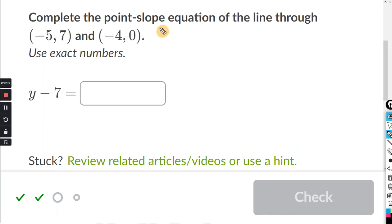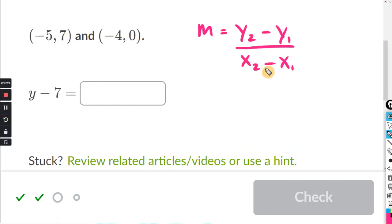All right, so they want us to complete the point-slope-form equation and use exact numbers. So first, let's find the slope of these two numbers. The slope formula, y2 minus y1 divided by x2 minus x1.